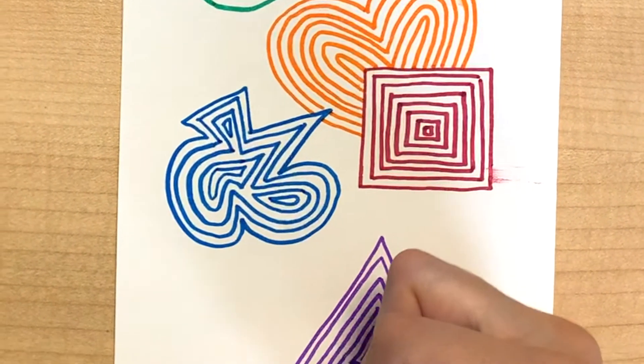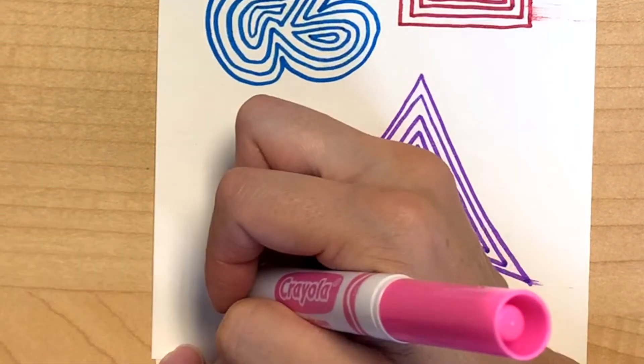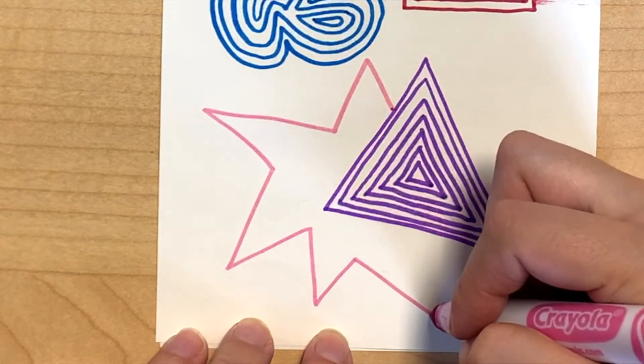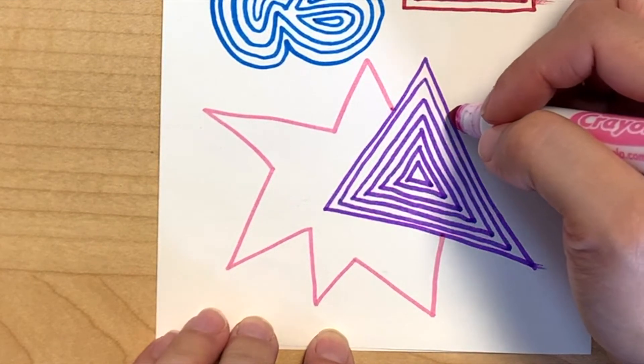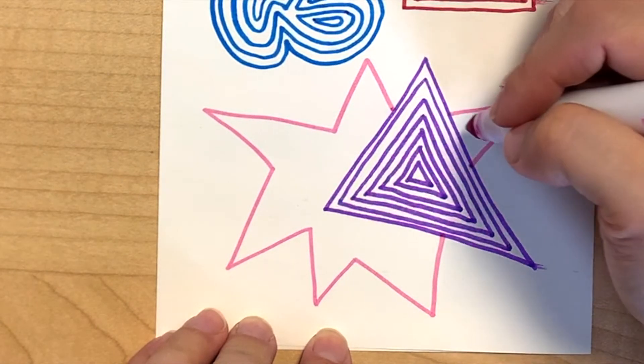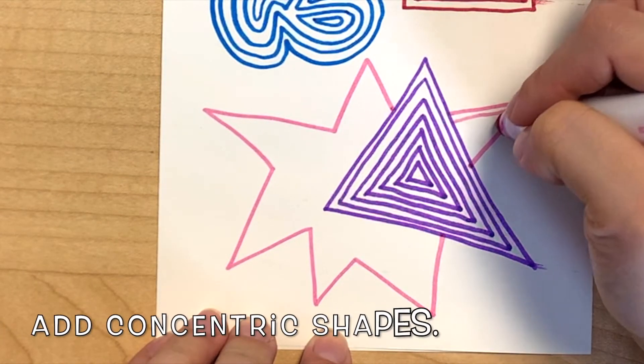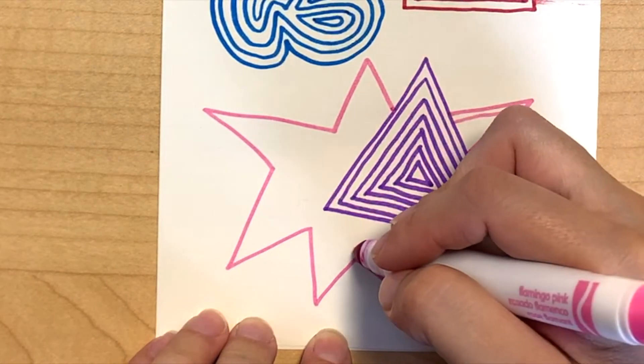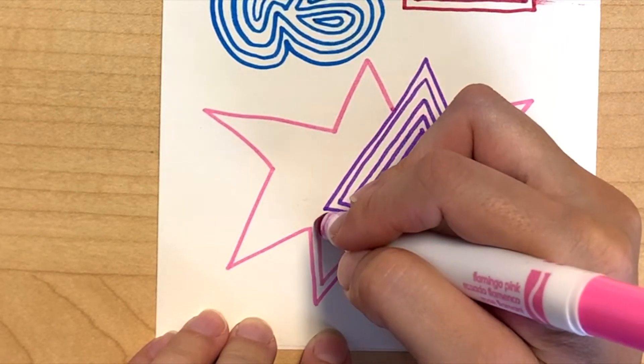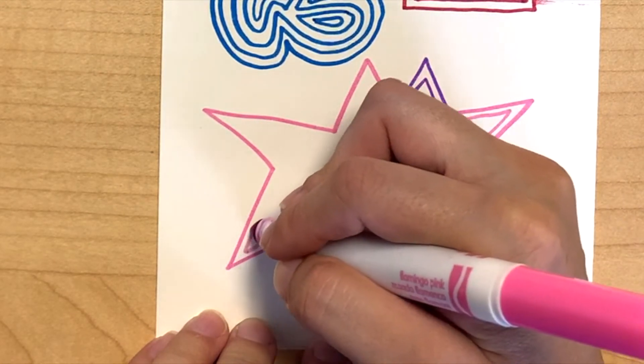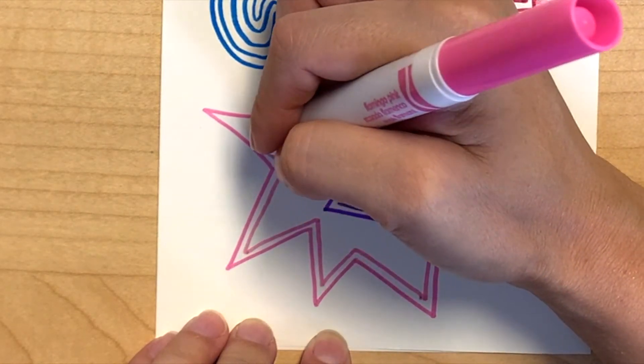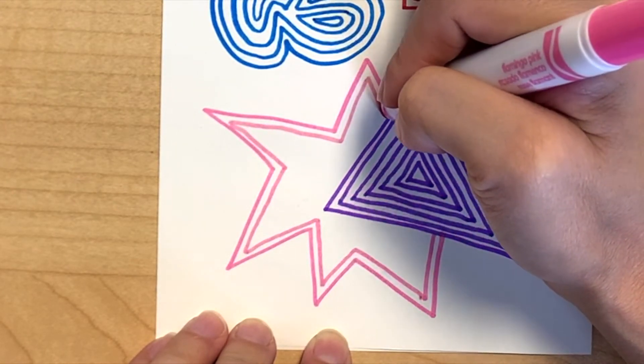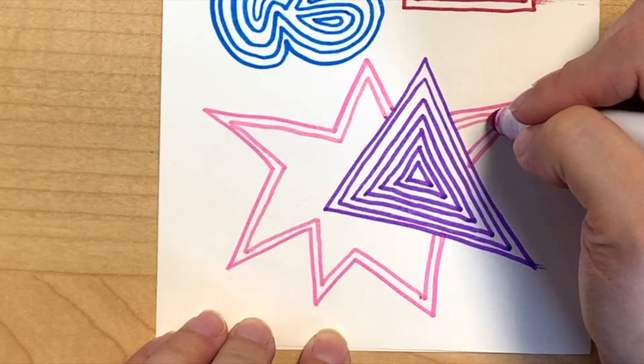Try another irregular shape that overlaps one of your original shapes.